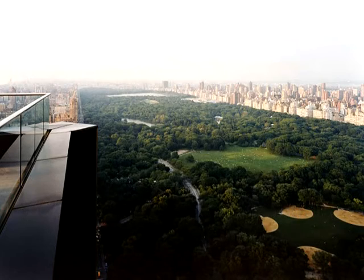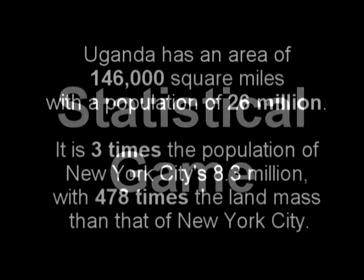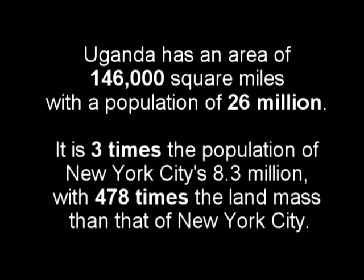I shall play a statistical manipulation game for a moment to stimulate the truth concerning overpopulation. Uganda has an area of 146,000 square miles with a population of 26 million people — that is three times the population of New York City's 8.3 million, with 478 times the land mass of New York's 305 square miles.